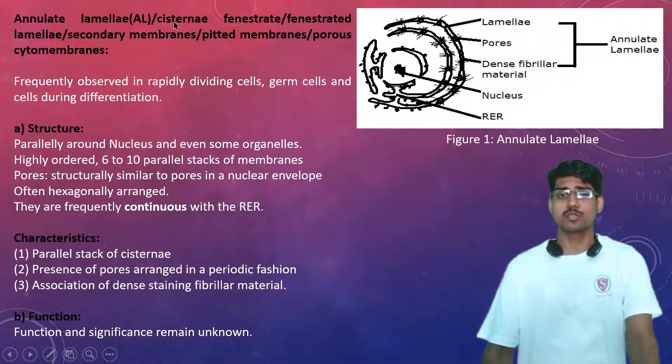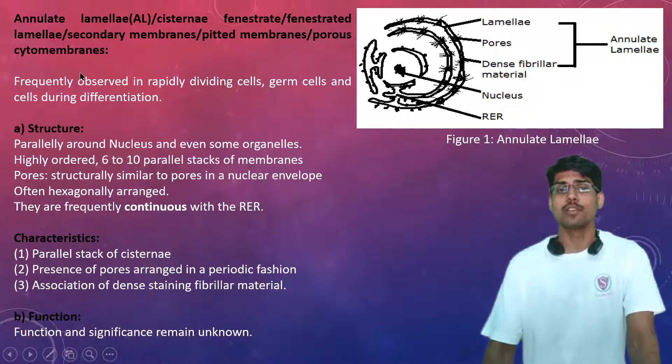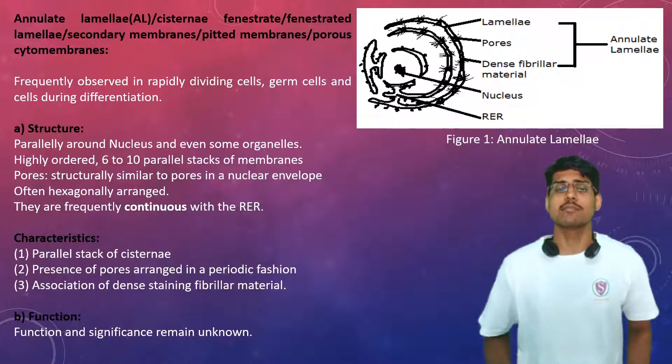There are some synonyms to annulate lamellae. The annulate lamellae is also referred to as cisternae fenestrate because of the fenestration throughout its structure, then the fenestrated lamellae, secondary membranes, pitted membranes, and porous cytomembranes. You can see all of these are referred by the same name of annulate lamellae.